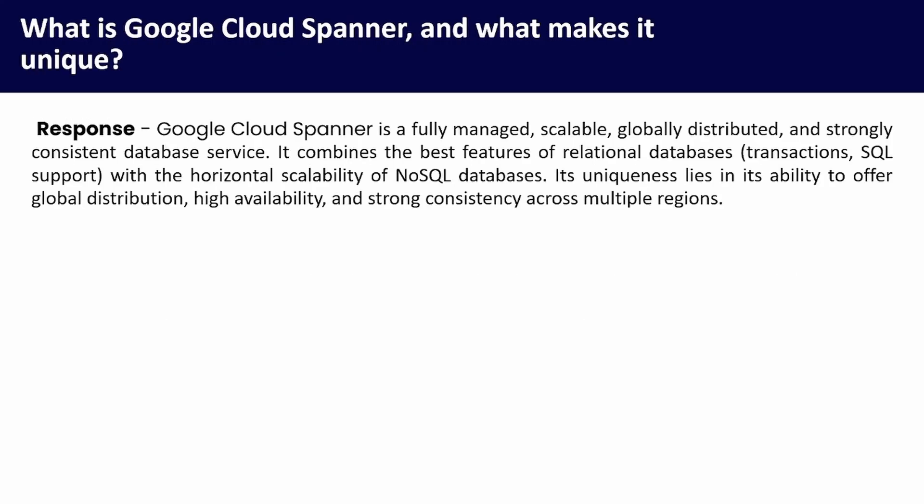What is Google Cloud Spanner and what makes it unique? Google Cloud Spanner is a fully managed, scalable, globally distributed, and strongly consistent database service. It combines the best features of relational databases (transactional SQL support) with the horizontal scalability of NoSQL databases. Its uniqueness lies in its ability to offer global distribution, high availability, and strong consistency across multiple regions.